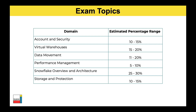Moving on to the exam topics and how much each domain makes up of the certification questions. There are six domains in total, covering account security, virtual warehouses — their purpose, configuration, and different options — and data movement and best practices. The smallest part of the exam is performance management at five to ten percent, while the largest portion is around overview and architecture.